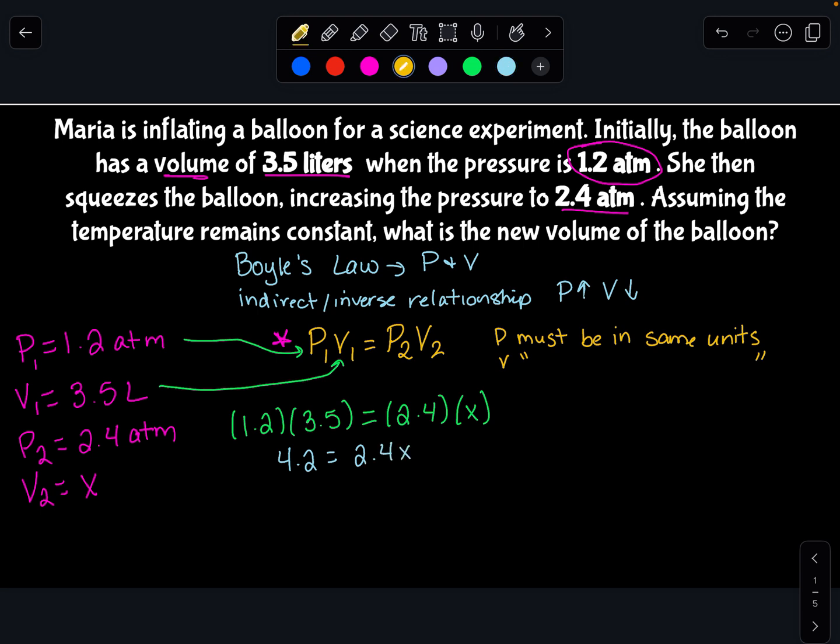Now, we have to get this x by itself. And in order to do that, we need to do the opposite equation for what's going on right now. So you'll notice that 2.4 is multiplied to x. So to get x by itself, we've got to do the opposite of multiplication, which is division. If we want x to be by itself, we need to divide this right side by 2.4. In algebra, whatever we do to the right side, we do to the left side. So now my equation should look like this.